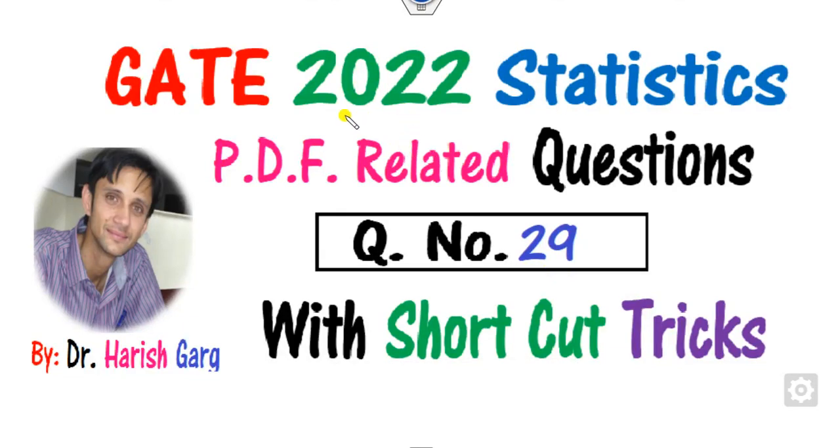Hello students, welcome to the next lecture on the GATE 2022 statistics exam. Today we will discuss question number 29 related to the probability density function, and of course we will see with the help of shortcut bits.